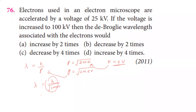The de Broglie wavelength is proportional to 1 over the square root of the accelerating potential. The first potential is 25 kilovolt and the second is 100 kilovolt. The ratio of the wavelengths is equal to the inverse square root of the accelerating potentials.